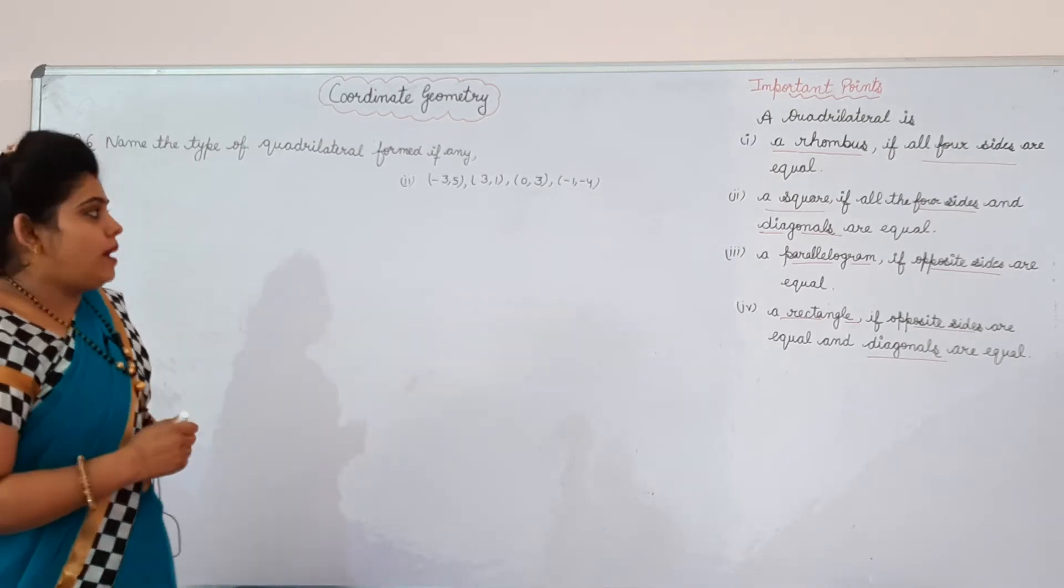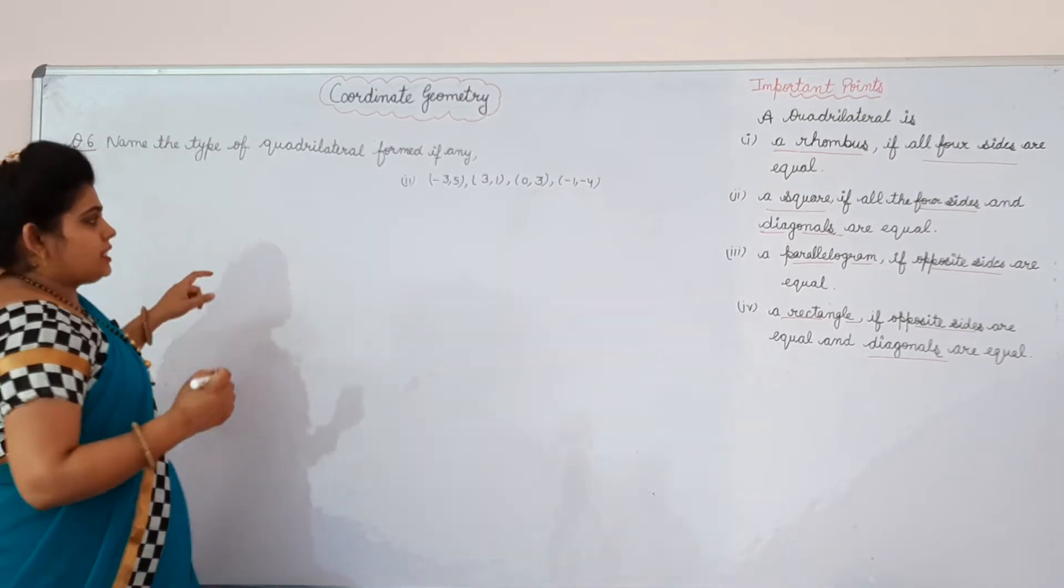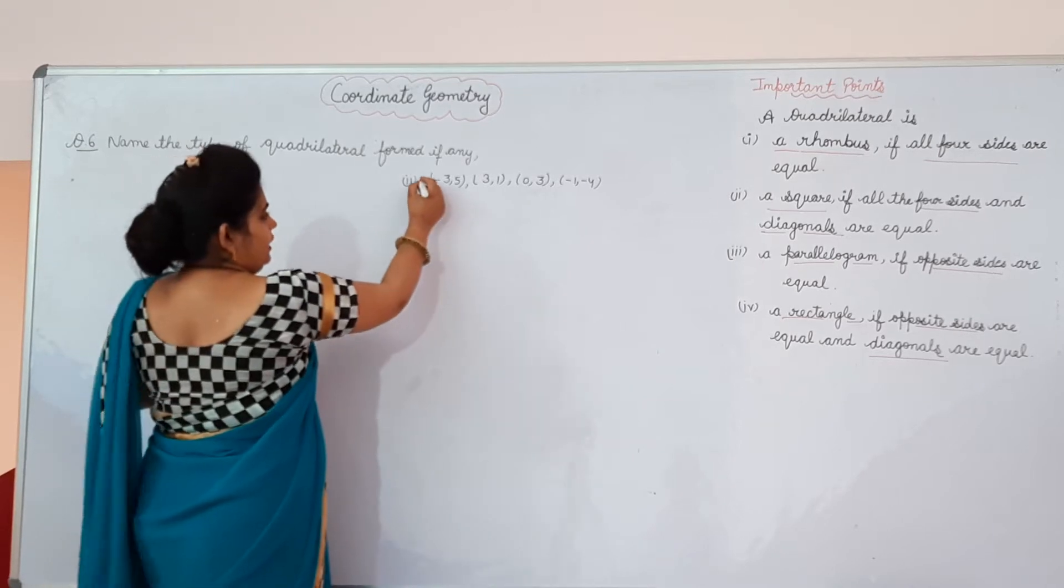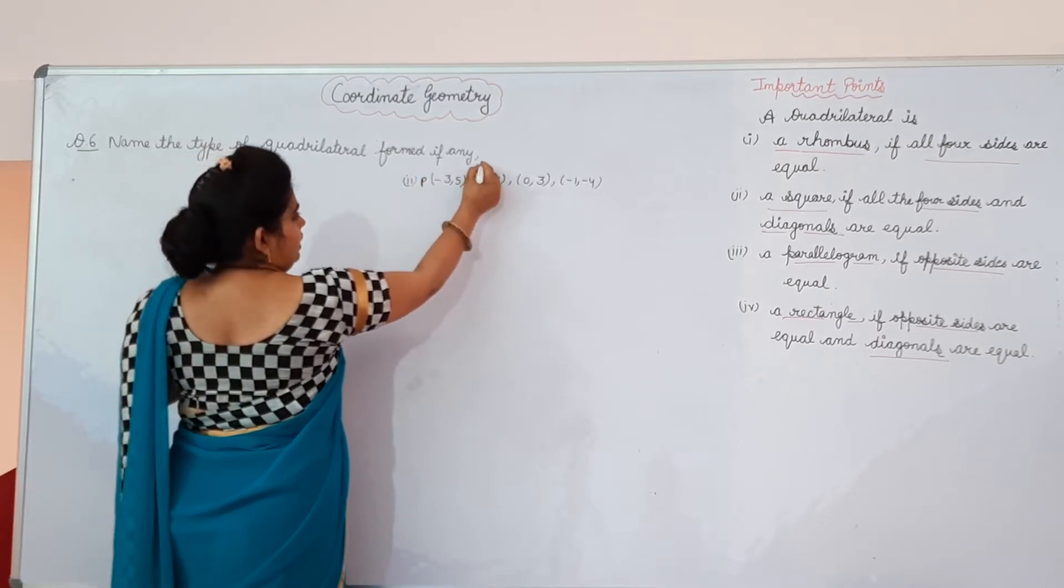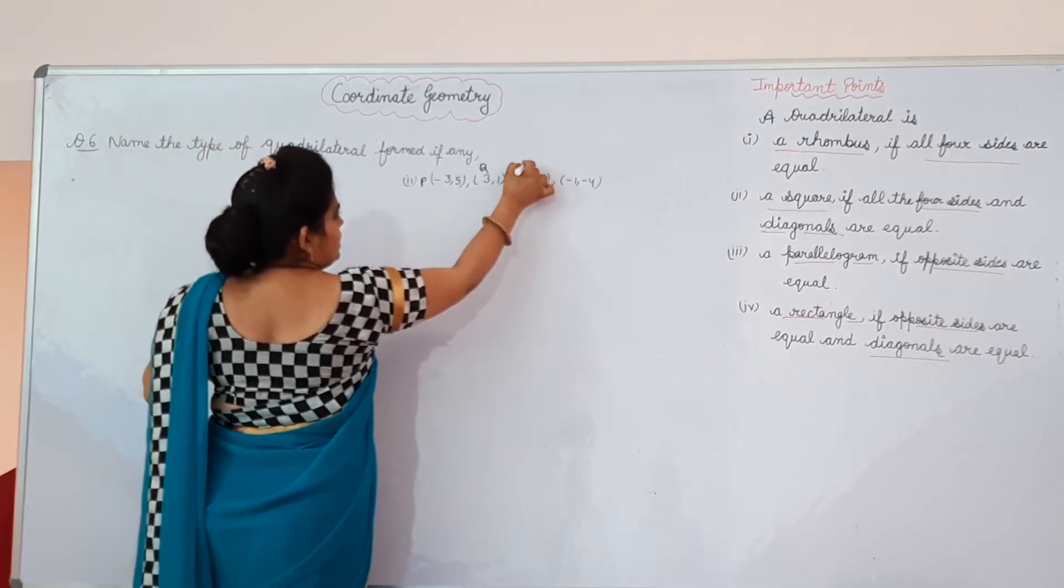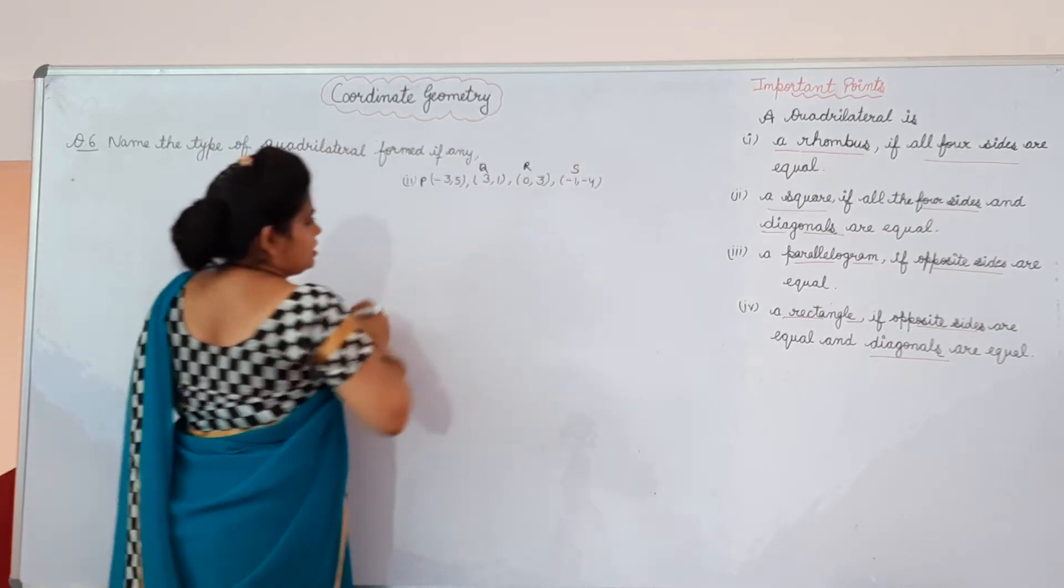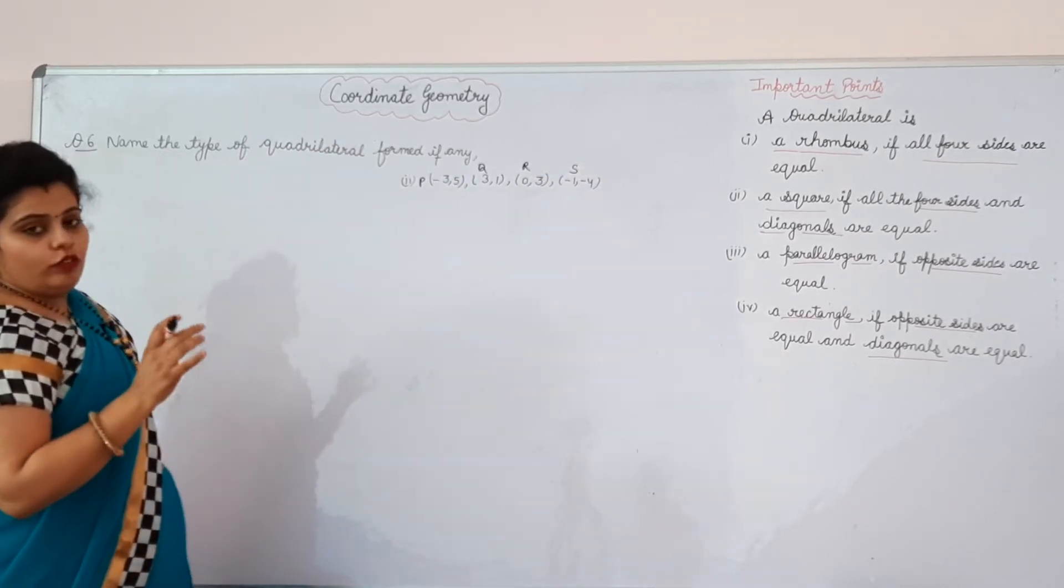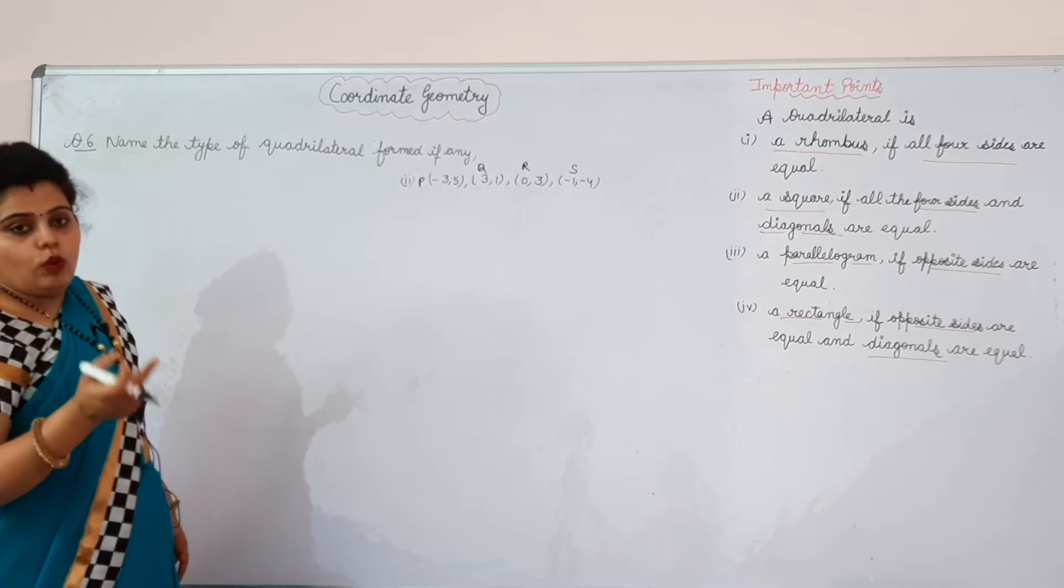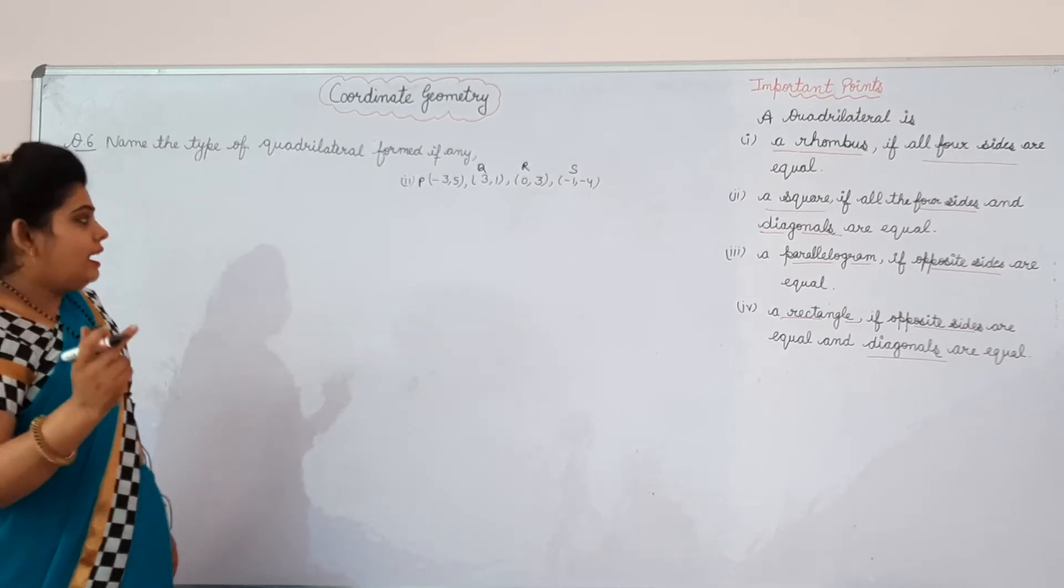Now, second part of question number 6. For the second part, let it is P and it is Q, it is R and it is S. So first of all we will find PQ, then QR, RS and SP.